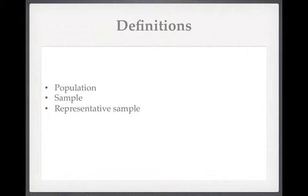For instance, if you chose as your sample everybody who turned up to your clinic with anal fissure, that wouldn't be a representative sample, because people who make it to a colorectal clinic have probably already been through primary care and likely have more severe disease than the average person with anal fissure.